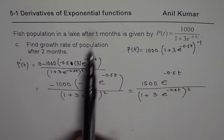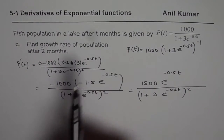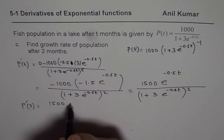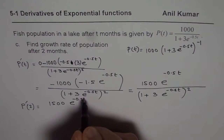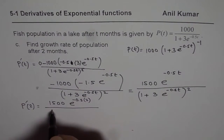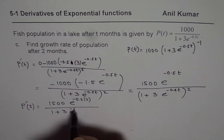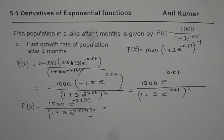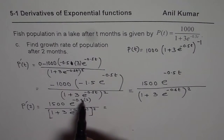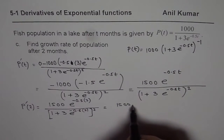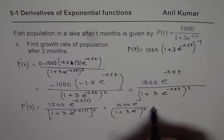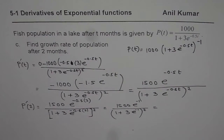We need to find the growth rate of the population after 2 months, meaning t equals 2. Substituting t equals 2, we get 1500 e to the power of minus 0.5 times 2, which is minus 1, divided by 1 plus 3e to the power of minus 0.5 times 2, whole squared. Since 0.5 times 2 is 1, this simplifies to 1500 e to the power of minus 1 divided by 1 plus 3e to the power of minus 1, whole squared.